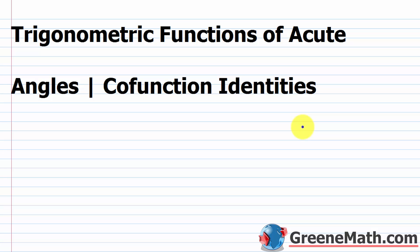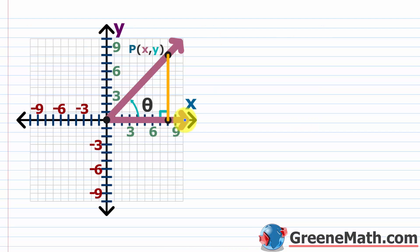In this lesson we want to talk about trigonometric functions of acute angles and also co-function identities. Previously we used angles in standard position to define the six trigonometric functions. In this lesson we're going to define our six trigonometric functions as ratios of the lengths of the sides of right triangles.